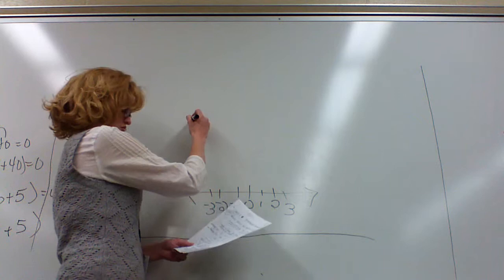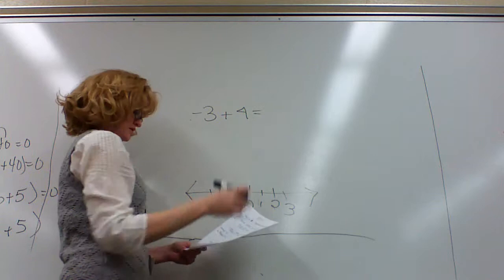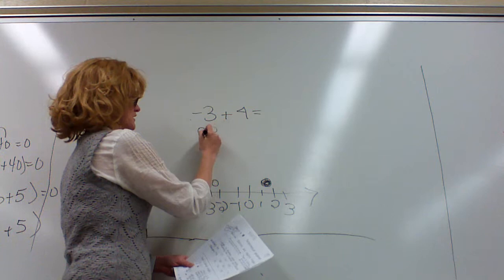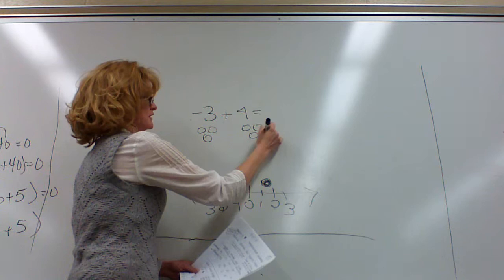We're going to talk about adding and subtracting integers. We're going to do one example here to show you a certain method that we're going to be using. Negative 3. For negative numbers, I'm going to use an empty circle. For a positive number, I'm going to use a filled-in circle. Negative 3 will have three empty circles.